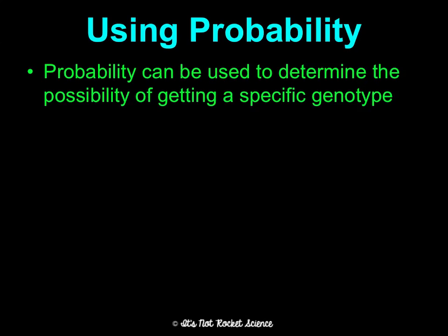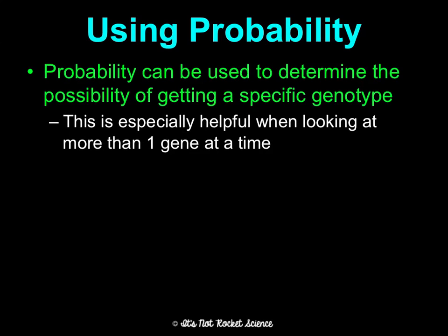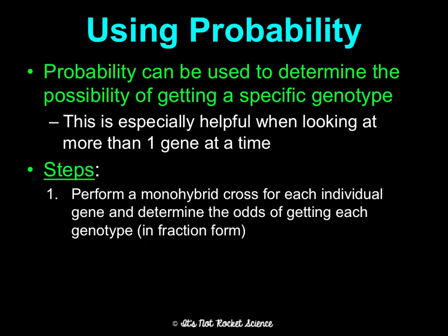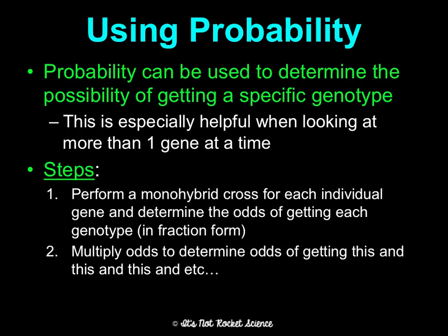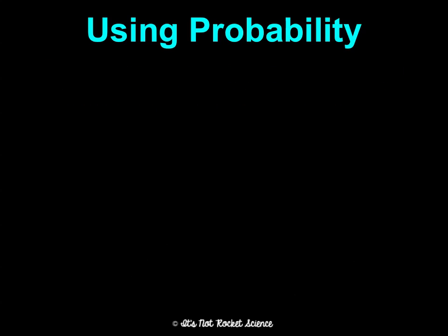I can use probability to determine the possibility of getting a specific genotype. This is especially helpful if I wanted to look at more than one gene at a time, and especially more than two. With two genes you can do dihybrid crosses, but any more than two it gets way too out of control. What you do is: first, perform a monohybrid cross for each individual gene — if we're looking at three genes, you'd do three monohybrid Punnett squares. Determine the odds of getting each genotype in fraction form. Then multiply the odds to determine the odds of getting this and this and this. In probability, if we want to know the probability of this AND this, we multiply; if we want this OR this, we add.